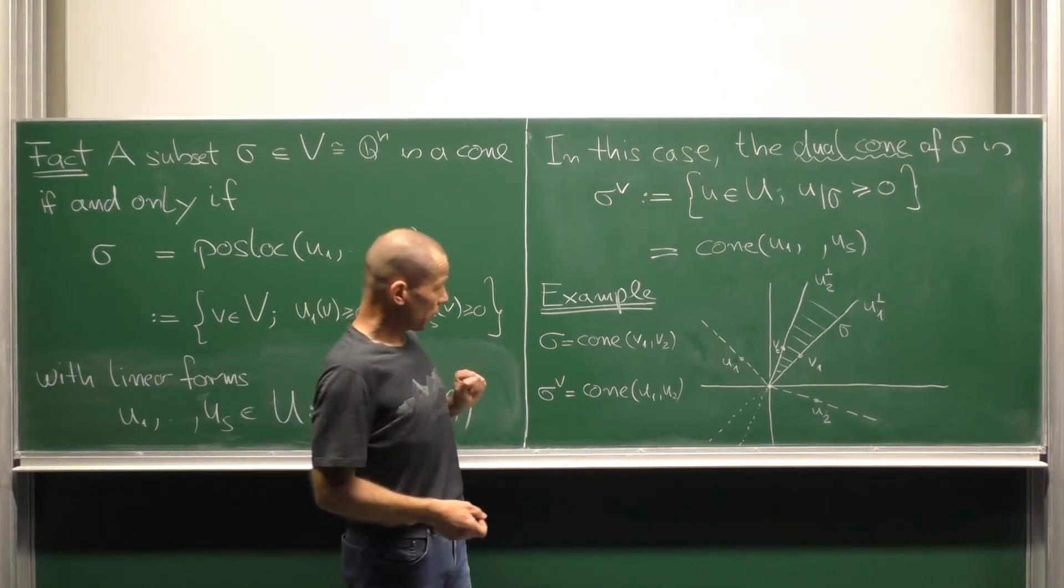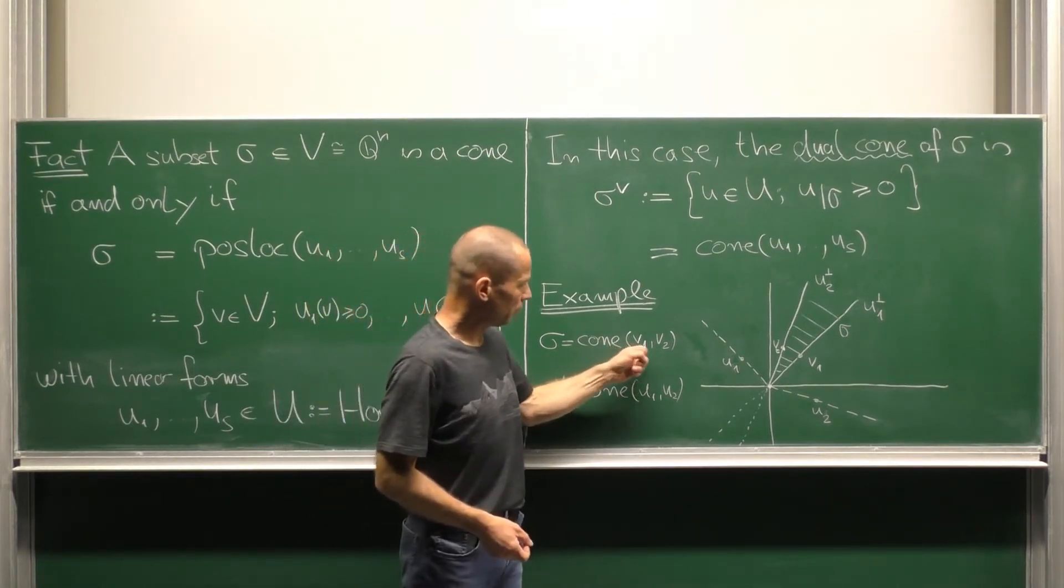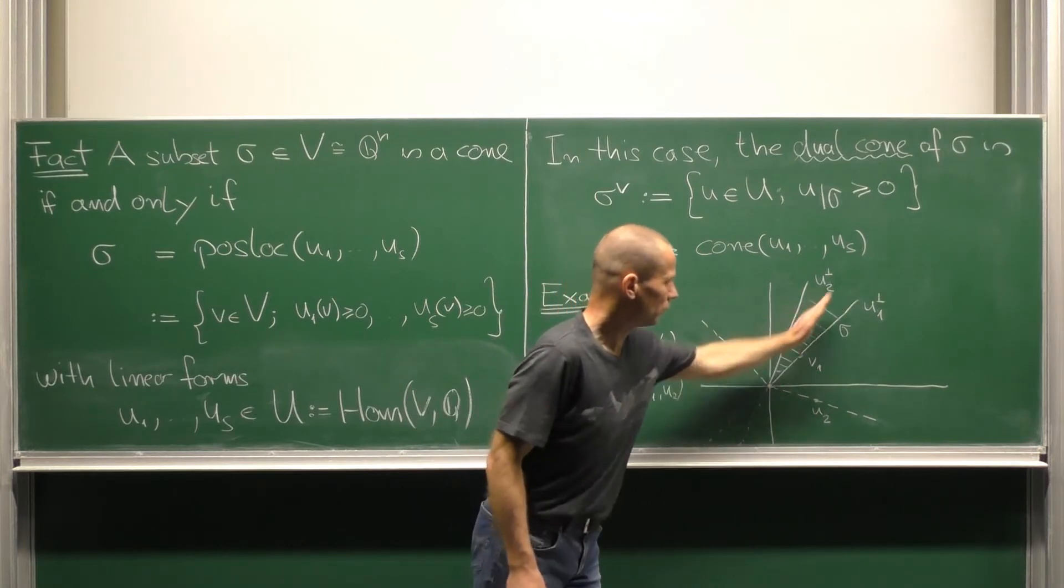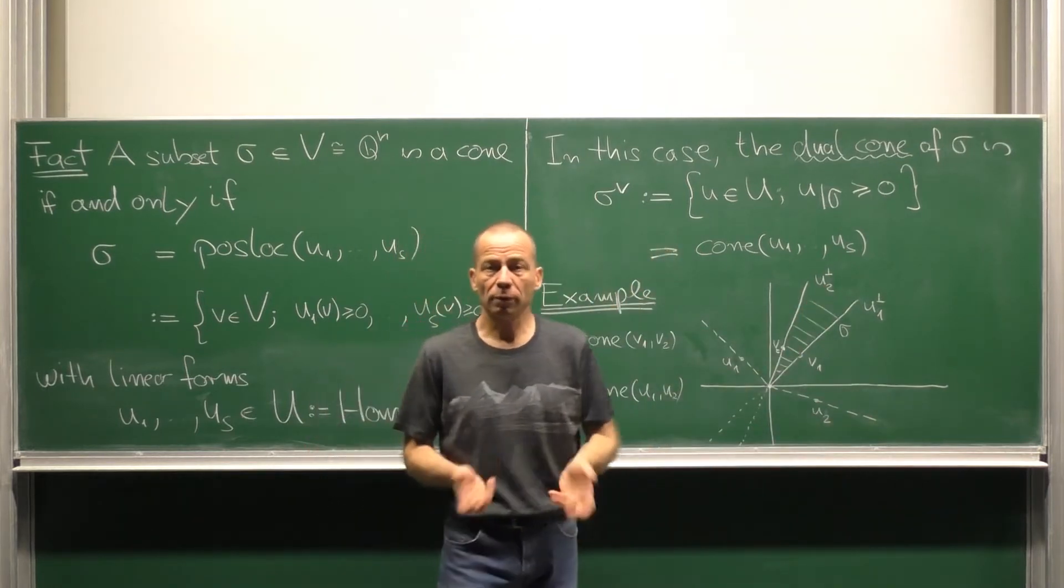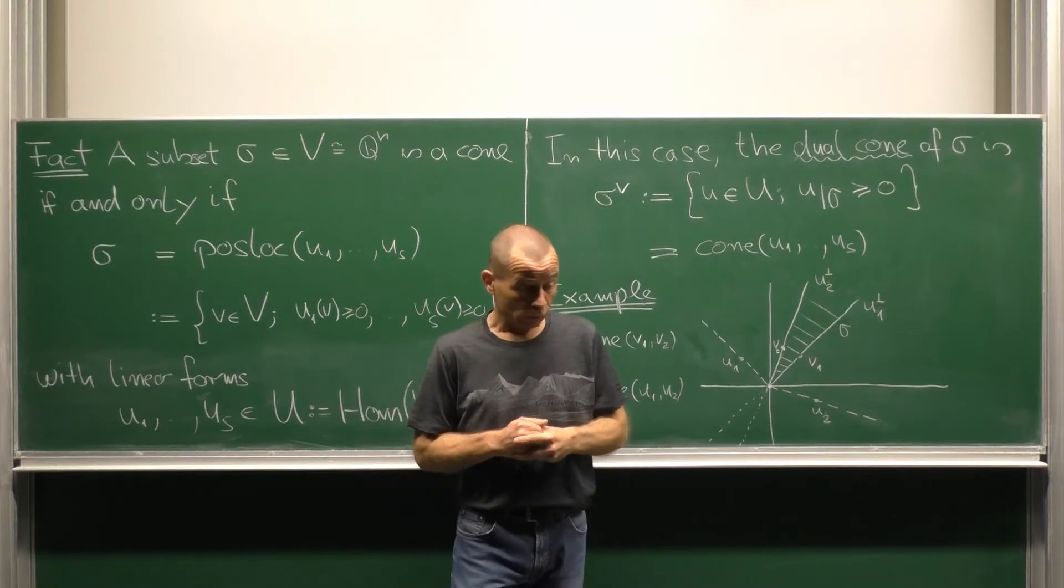Let us look at an example. Consider the cone sigma generated by the vectors v1 and v2, so this cone. We want to describe sigma by means of linear forms.